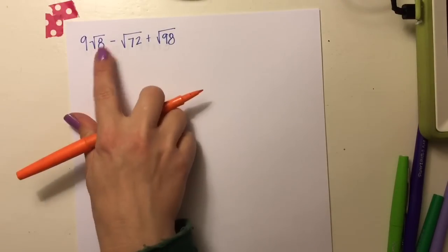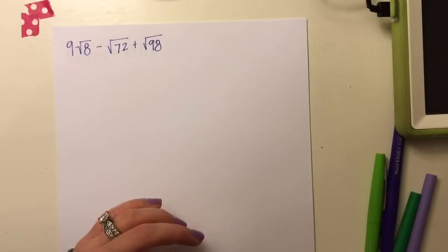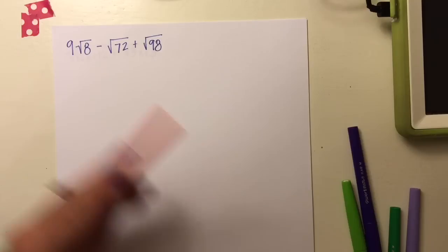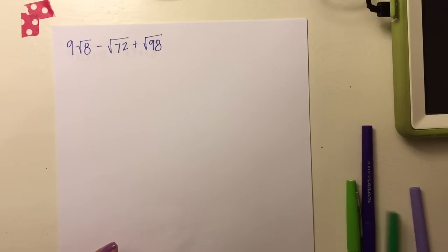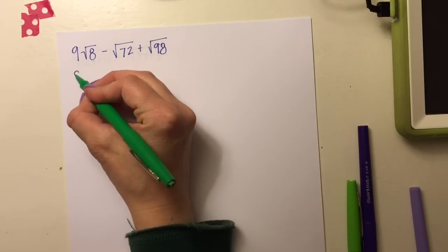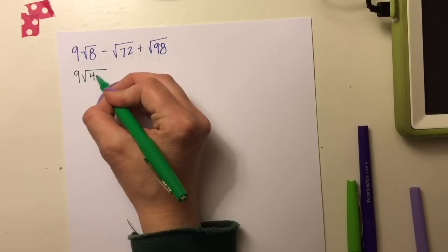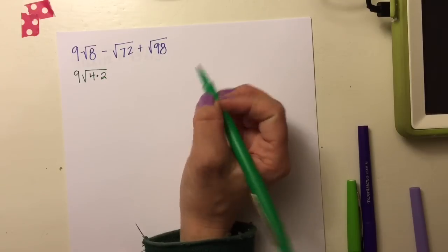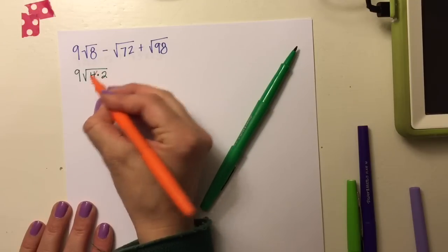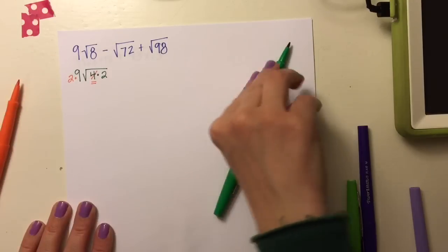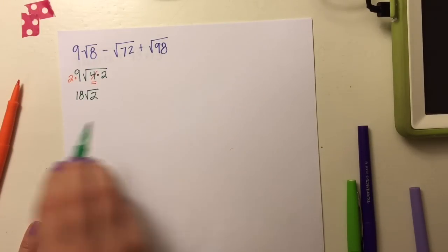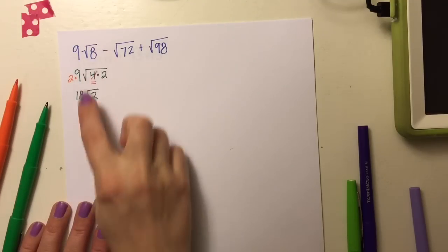When the radicands don't match, you have to figure out how to give them the same radicand. Don't stress about making them all match — simplify each piece individually and they should end up with a matching radicand. So for 9√8: I'm leaving the 9 out and writing 8 as 4 times 2, because 4 is a perfect square and √4 = 2, so 2 comes outside. That makes 9√8 become 18√2.